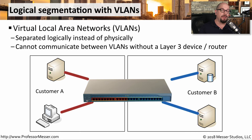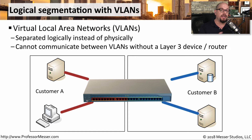If you do need to enable communication between two separate VLANs, you would use a router or some other Layer 3 device. In high security environments like this one, you may put a firewall in between these VLANs and have the firewall act as a Layer 3 device. That would allow customer A and customer B to communicate to each other, but only using the very specific security rules that you're configuring in the firewall.